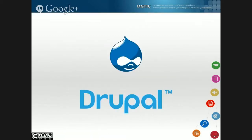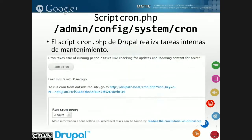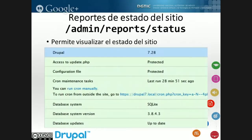Para Drupal, se recomienda que se ejecute el cron con periodicidad. La URL de la ubicación del cron está disponible en las diapositivas. Drupal 7 ya lo ejecuta de manera predeterminada con cierta periodicidad. Cuando se ejecuta el cron, se actualiza el reporte de estado, donde nos aparece si Drupal está en la última versión y otros mensajes. Es importante para los administradores del sitio revisar esos mensajes con cierta periodicidad.